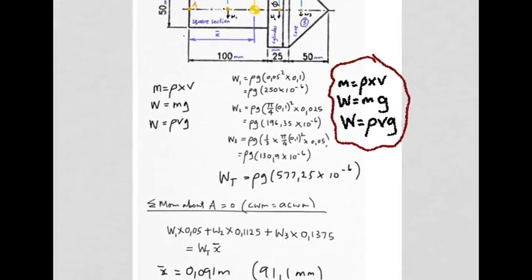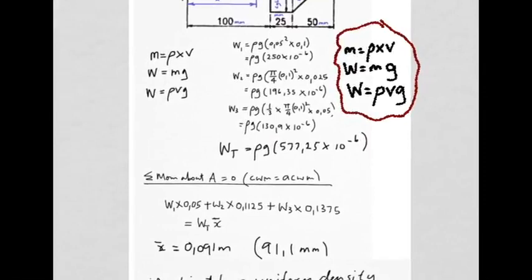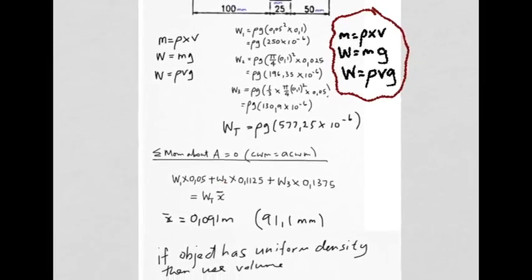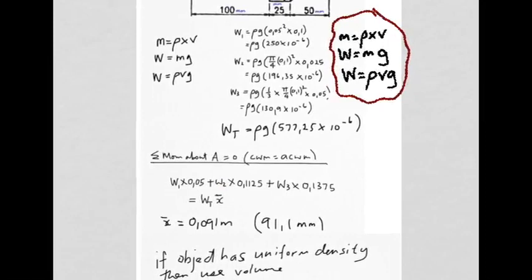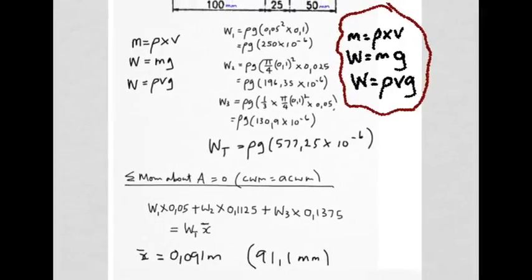So back to our moments calculation that we did a little while ago. We take each of those values and we insert them for weight one, weight two, and weight three. You can try that with your calculators, and you're also going to find conveniently that rho g cancels out throughout the terms, and you end up with this answer here. So I want you to try that before we proceed.